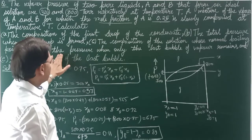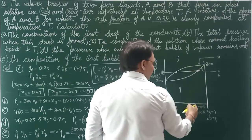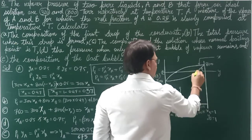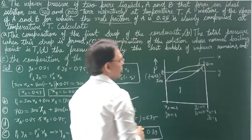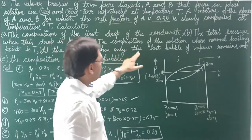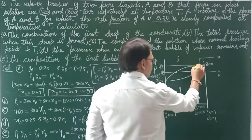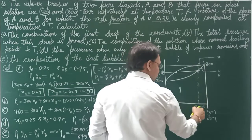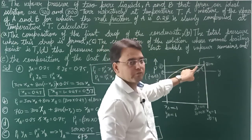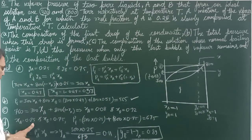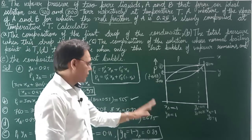Part D asks for the pressure when only the last bubble of vapor remains. We started at vapor phase mole fraction y_A = 0.25, y_B = 0.75. As we keep increasing pressure, we move up the diagram until the last bubble of vapor remains. At that point, the original vapor mole fractions become the liquid mole fractions: x_A = 0.25 and x_B = 0.75. So P_total = 300·(0.25) + 800·(0.75) = 675 torr.